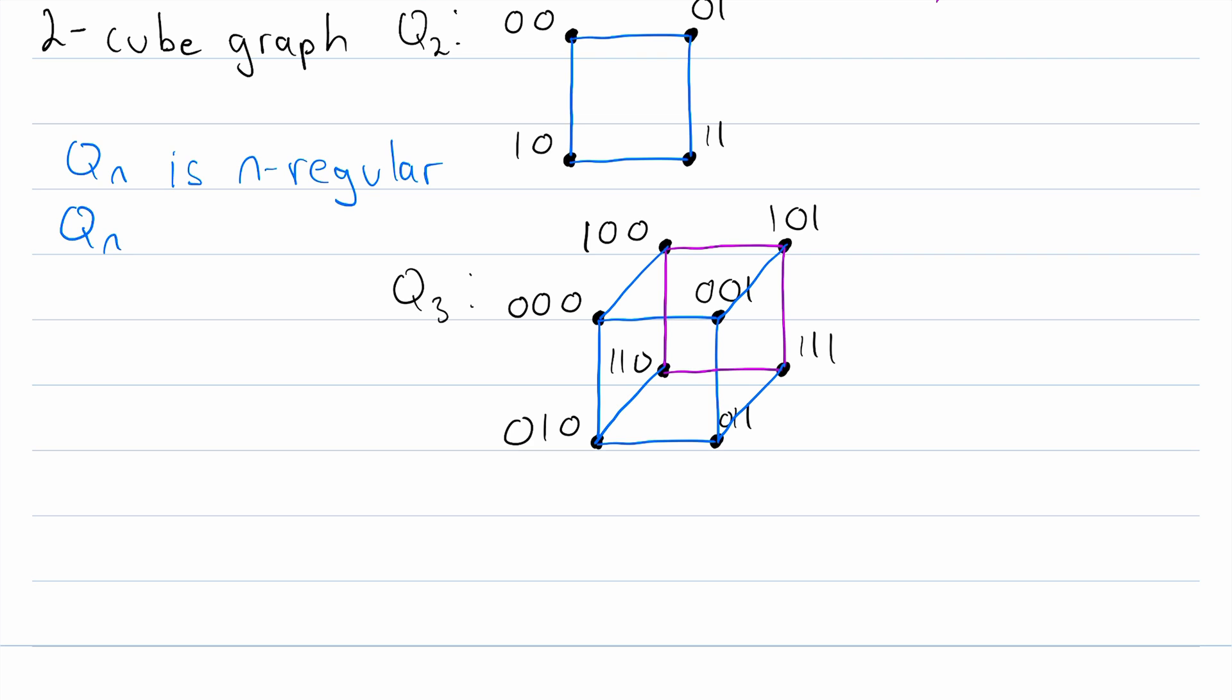Another very interesting fact is that all hypercube graphs are bipartite. For example, you can see that this graph is bipartite where the red vertices are in one partite set, and the green vertices are in the other. Again, I encourage you to figure out why that is true. The hint I'll give you is to look at how many ones a vertex has in its label, compared to how many ones its adjacent vertices have in their labels.